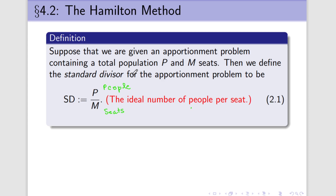The 'ideal' part comes about because whenever we're dealing with the standard divisor, this is the method we naturally gravitate toward using — it's what anybody who tries to work on an apportionment problem tries first in order to get a fair apportionment. If the world was perfectly fair, every single time we use the standard divisor we would get the correct apportionment for every state. In reality, that rarely happens, so we just think of SD as the ideal number of people per seat, and a lot of times we have to switch things up.